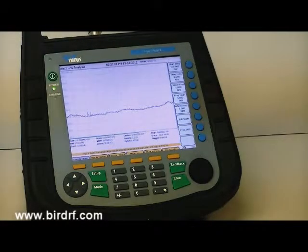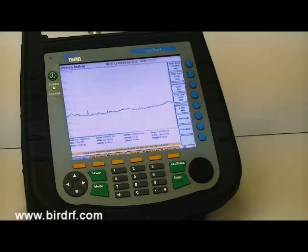Using markers allows the user to mark a signal in order to accurately determine the frequency and power level of that signal. The Signal Hawk has up to six markers that can be activated to assist the user to find wanted signals and also uncover interfering signals.